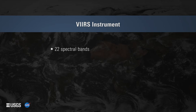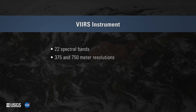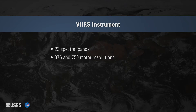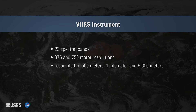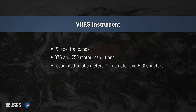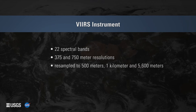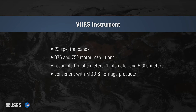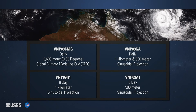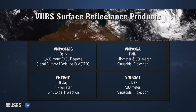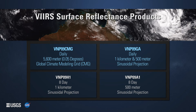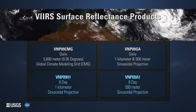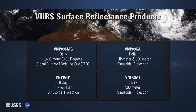The VIIRS instrument provides 22 spectral bands at two spatial resolutions — 375 meters and 750 meters — which are resampled to 500 meters, 1 kilometer, and 5,600 meters in the NASA-produced data products to promote consistency with the MODIS heritage. The LP DAAC distributes four different types of VIIRS surface reflectance products, including two daily VIIRS surface reflectance products and two 8-day surface reflectance products. All data distributed by the LP DAAC are available for download at no charge.